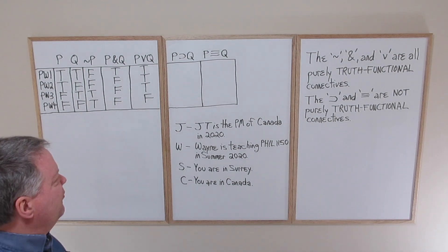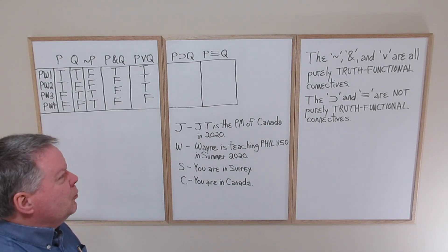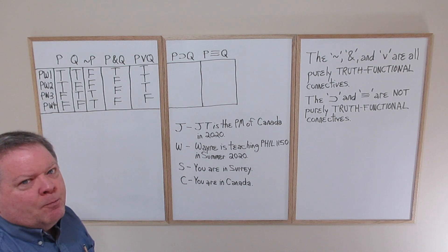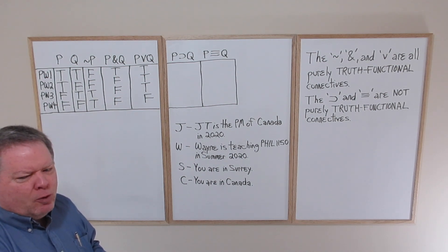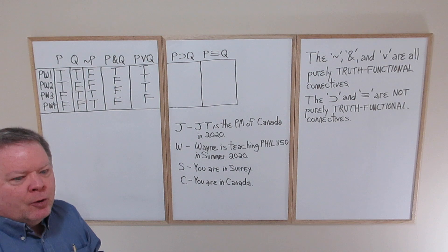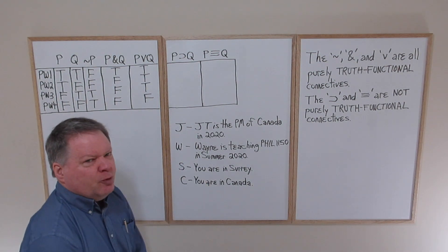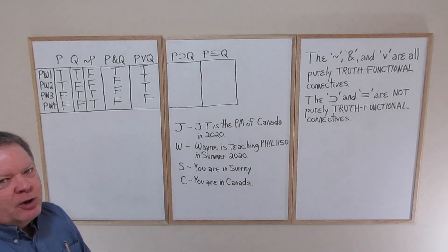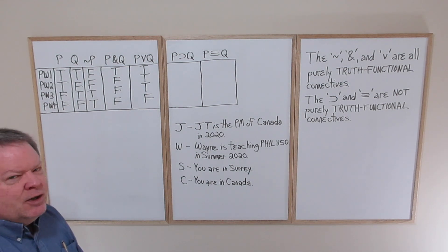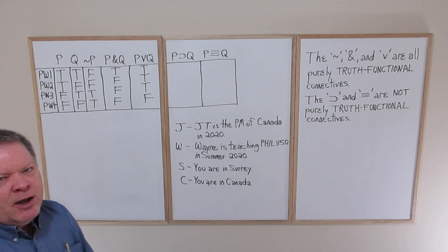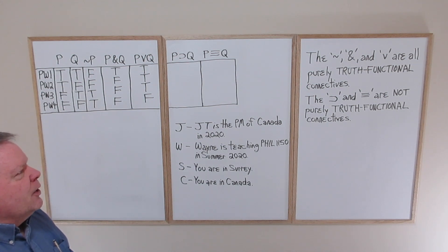In this fourth video, I'm going to acquaint you with the eight basic rules of logical inference. Before I do that, I want to return to the truth table discussion we had earlier and explain how the conditional and the biconditional fit into the truth table characterization.